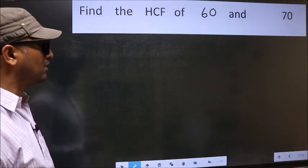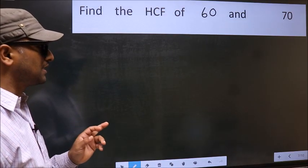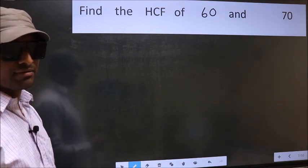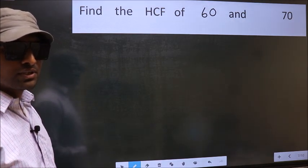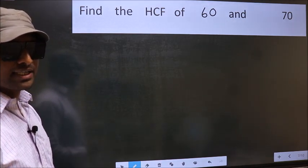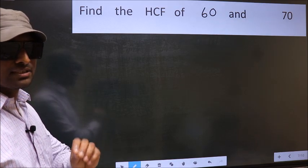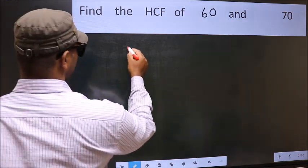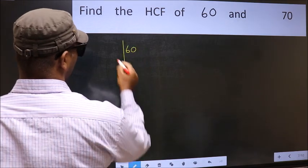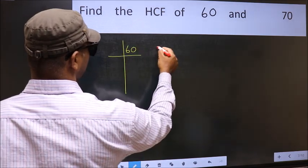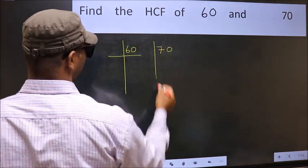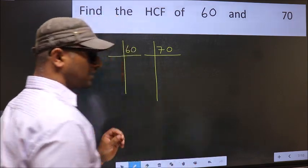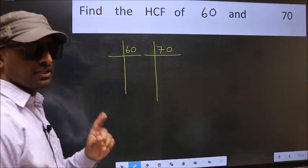Find the HCF of 60 and 70. To find the HCF, we should do the prime factorization of each number separately. What I mean is 60 and 70. This is your step 1.